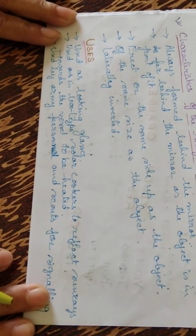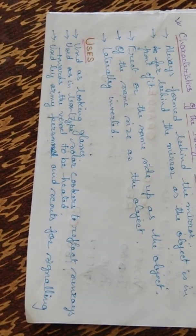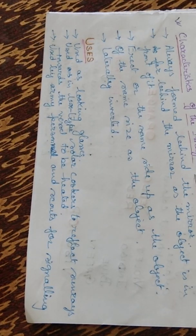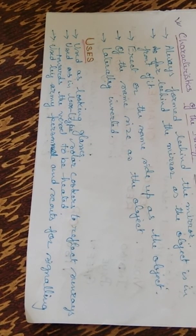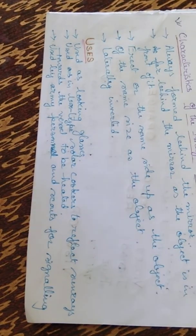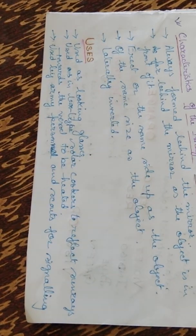The image is always formed behind the mirror — it is a virtual image. It forms a virtual image behind the mirror. As far behind the mirror as the object is in front of it. The distance between the object and the mirror will be equal to the distance between the image and the mirror.